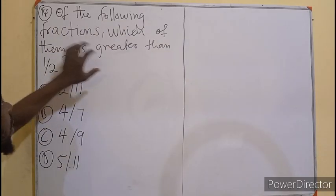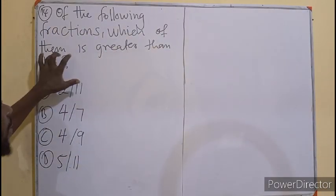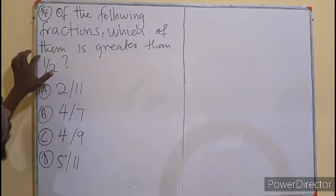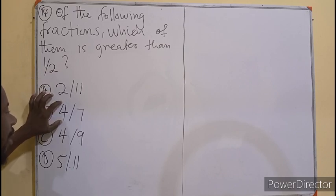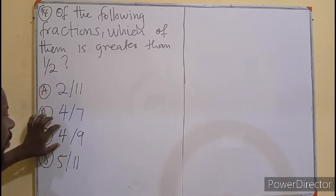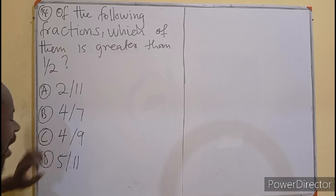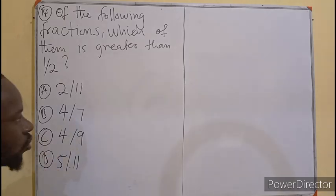Question 14. Of the following fractions, which of them is greater than half? That's 1 out of 2. We have 2 out of 11, 4 out of 7, 4 out of 9, 5 out of 11.